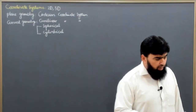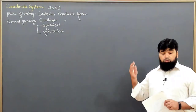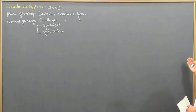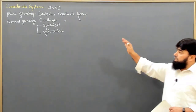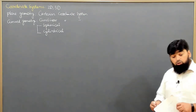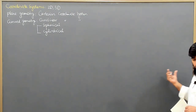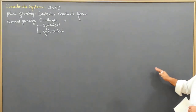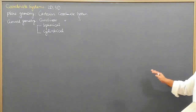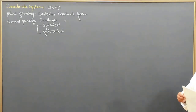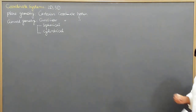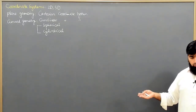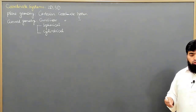For example, if I want to measure the length of the wall or this board, it is a planar geometry, so it is better to use a Cartesian coordinate system. But instead of a scale, if I want to find the length of this geometry with the help of a spherical object — say a football — I can do that measurement and the result with both systems will be the same, but the calculations will be difficult.